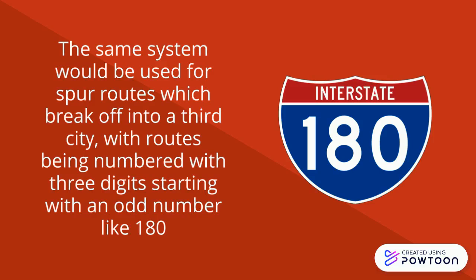The same system would be used for spur routes, which break off into a city, with routes being numbered with three digits starting with an odd number, like 180.